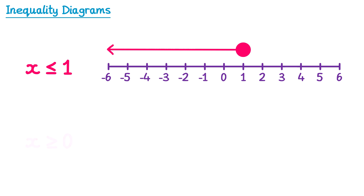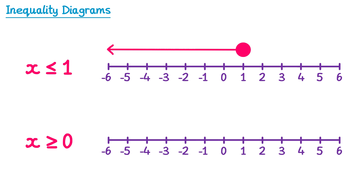Let's try x is greater than or equal to 0. We start by drawing a circle above the number 0, then draw an arrow to the right since they're greater than 0, and because it's greater than or equal to, we shade in the circle. So whenever you have a greater than or equal to, or a less than or equal to, you must shade in the circle. If it's just a less than or greater than, the circle won't be shaded.